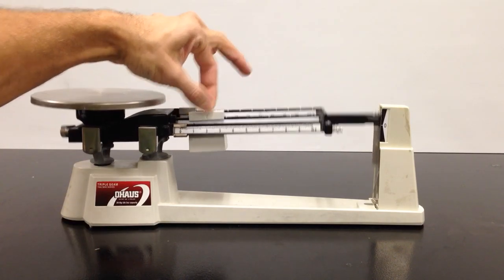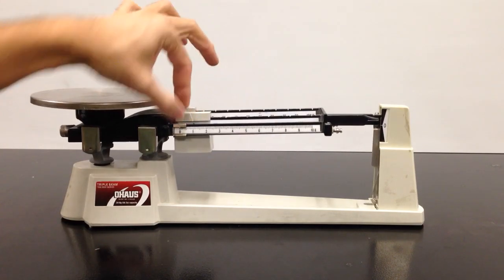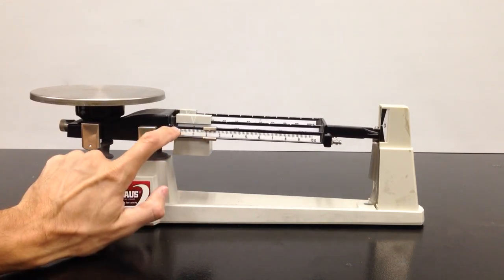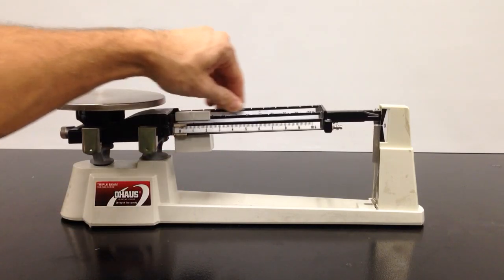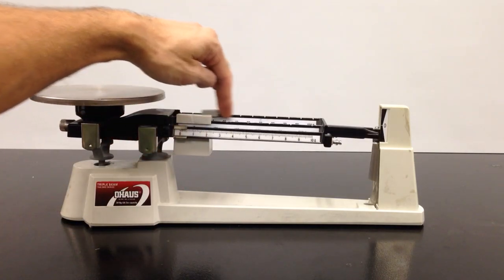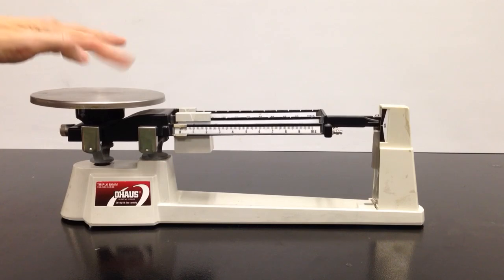This weight right here is for the hundred gram increments. This one's for one gram increments, or even tenths of a gram if you read these little lines here. And then this weight in the back is for ten gram increments. This is the tray where you'll put your specimen, whatever you're measuring.